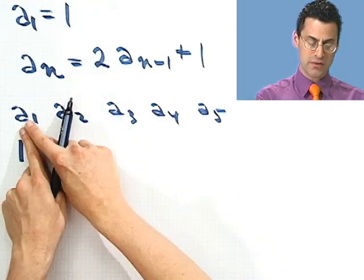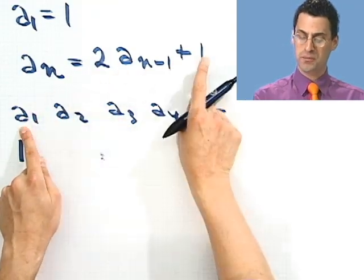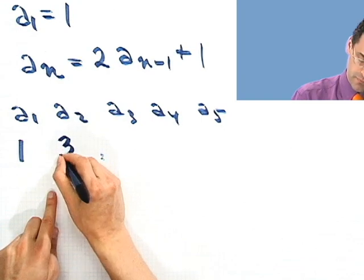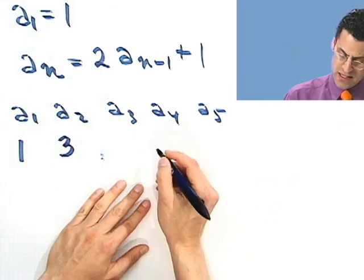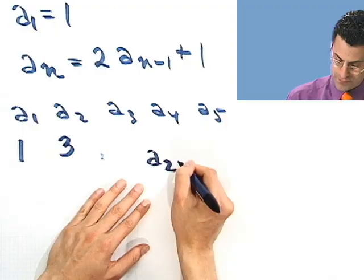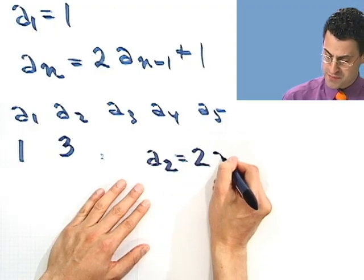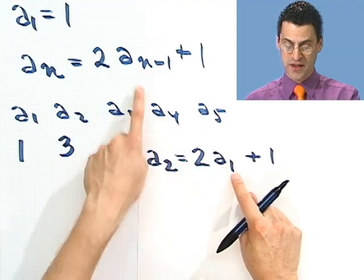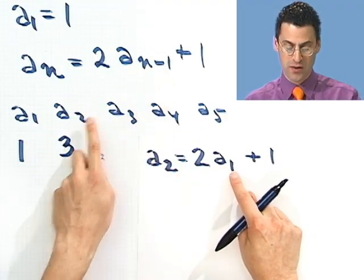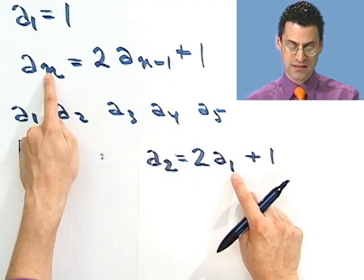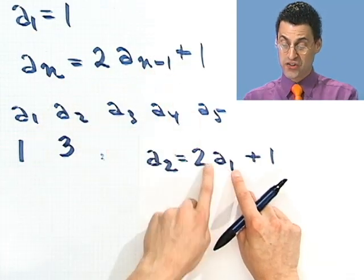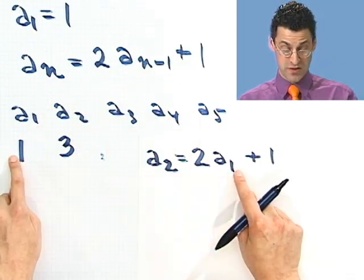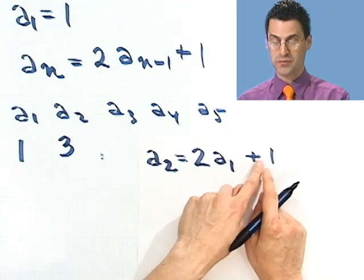So 2 times the previous number would be 2, plus 1 would be 3. So in fact, what I'd see here is that a₂ would equal 2 times a₁ plus 1. And where'd that 1 come from? That's just 2 minus 1. Wherever I see a 2, I replace the n by 2. So 2 minus 1 is 1. So I need the first term, which is 1. So 2 times 1 plus 1.